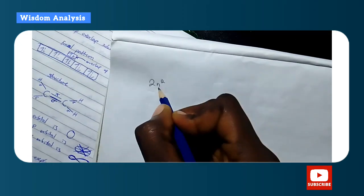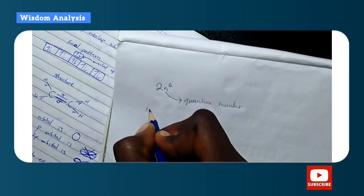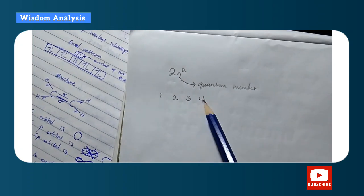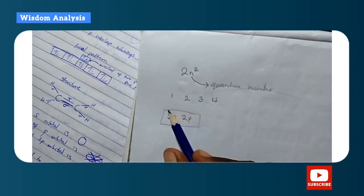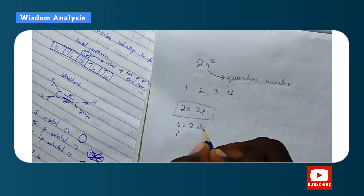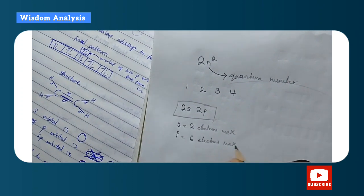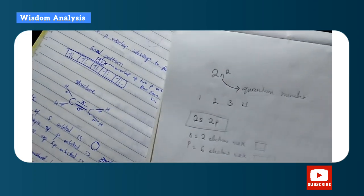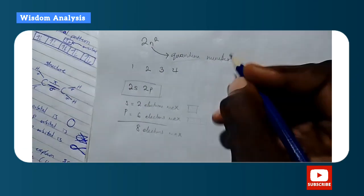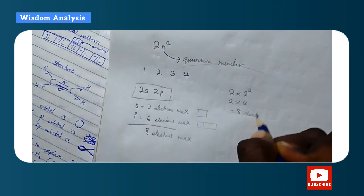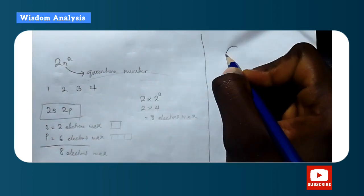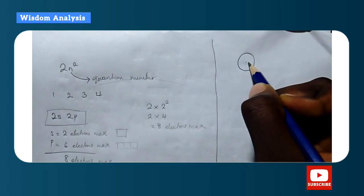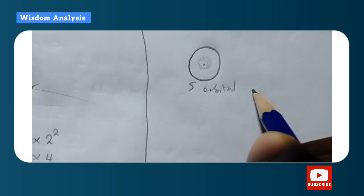The formula for the maximum number of electrons in a shell is 2n², where n is the principal quantum number. For example, the second shell has 2s and 2p subshells, giving 2 + 6 = 8 electrons maximum. Using the formula: 2×(2²) = 8, which confirms the principle.